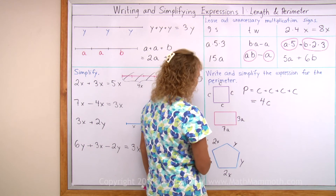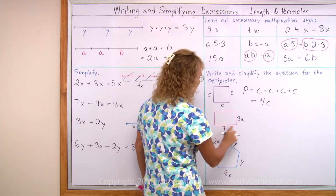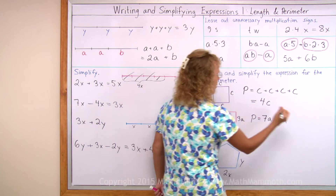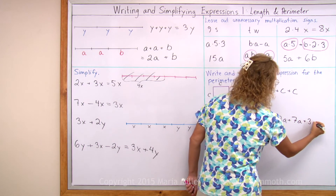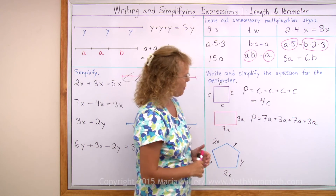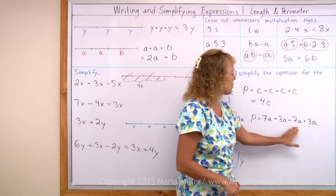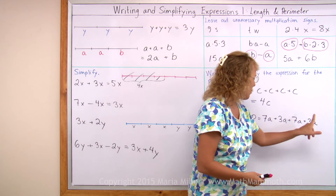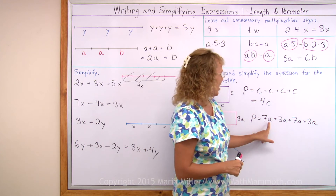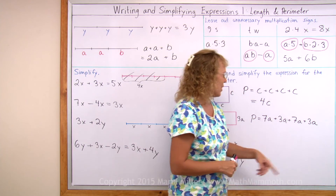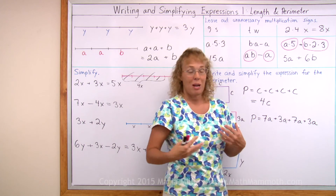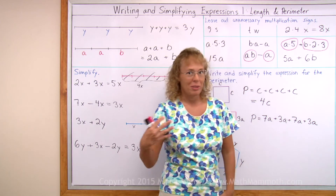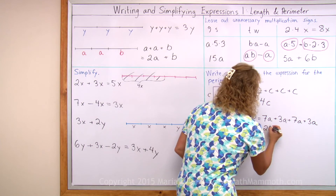Over here is a rectangle. I go all the way around and get 7a plus 3a, then another 7a, and then one more 3a. We have four terms, but they are similar terms because they all have the same variable part — just a. Just like 7 apples plus 3 apples plus 7 apples plus 3 apples is a total of 20 apples, you can just add the plain numbers: 7 plus 3 plus 7 plus 3 equals 20. So the total is 20a.